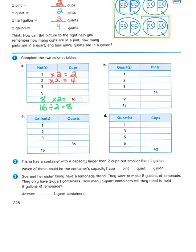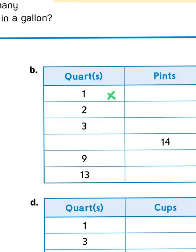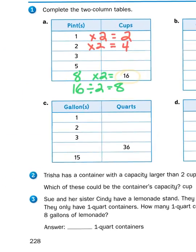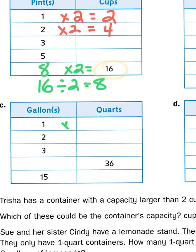I would do the same thing in these other three tables. I would just multiply the number on the left by the conversion. Okay, so there are two pints for every quart, so I would multiply every number on this side by 2. There are 4 quarts for every gallon, so I would multiply every number on this side by 4.